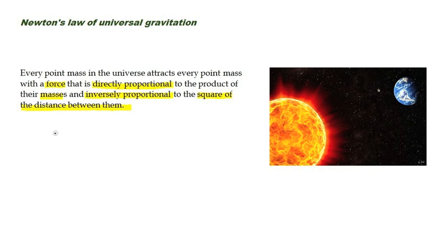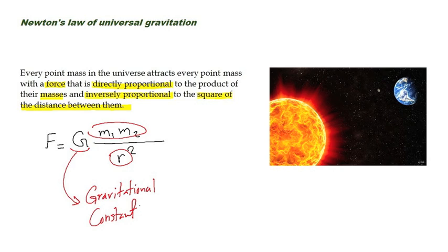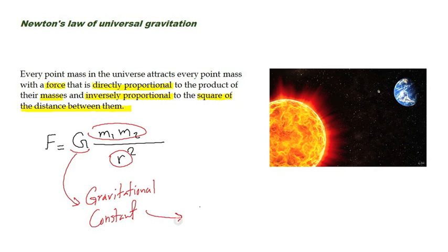So the magnitude of force is equal to G times M1 times M2 over R squared. M1 and M2 are masses and R is the distance between them. G is the gravitational constant, a physical constant obtained by measurements, representing the value 6.67 times 10 to the minus 11, with units of Newton times meter squared over kilogram squared.